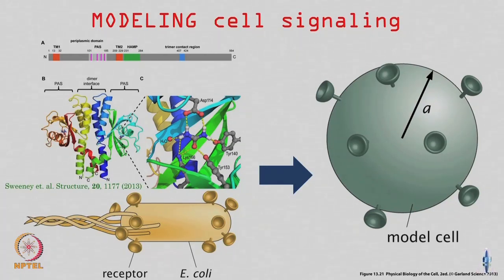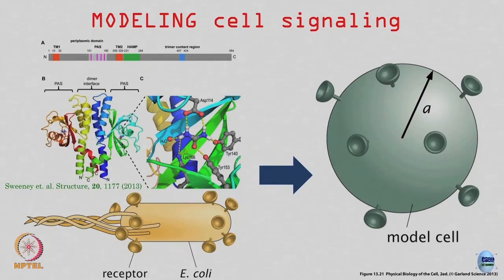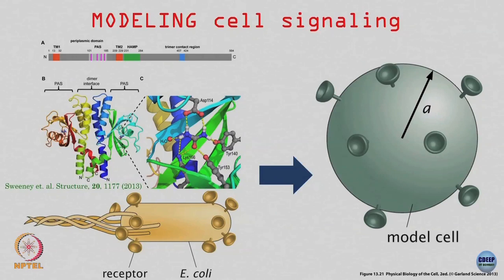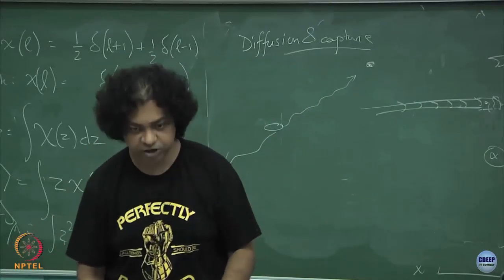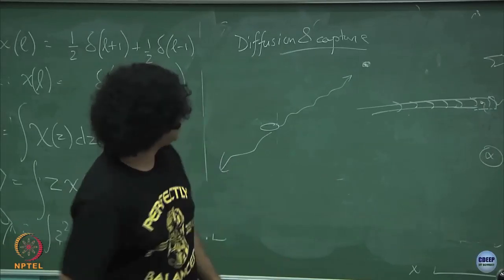For example, if some chemical is food for E. coli and you produce it at some point, the E. coli will try to swim towards that food source. If you give a chemical which is harmful - a repellent - the E. coli will try to swim in the other direction. How does it sense these gradients? It senses them through chemoreceptors on its surface, then modifies its random walk diffusion process according to the concentration of chemoattractants or chemorepellents. This is called the cell signaling problem.